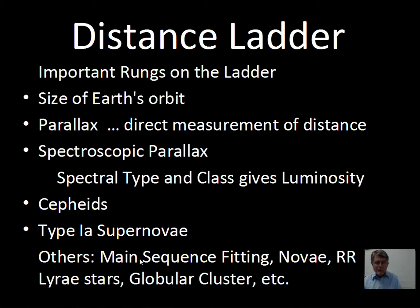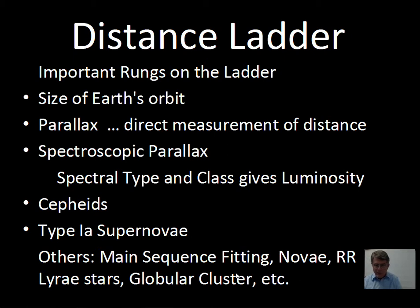Some other distance methods you might read about: main sequence fitting for clusters of stars — the HR diagrams for one cluster versus another won't fall on top of each other due to distance making the more distant cluster dimmer, but that gives a clue as to how far away the cluster is. There are also novae — explosions on the surface of white dwarfs — RR Lyrae stars with their light curve variation (though RR Lyrae stars are dimmer than Cepheids), the average brightness of globular clusters around a distant galaxy, the second brightest galaxy in a cluster of galaxies, and some other methods as well.